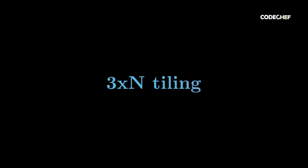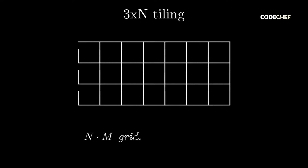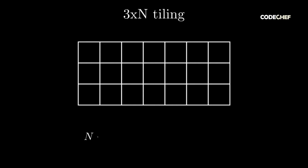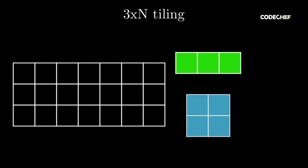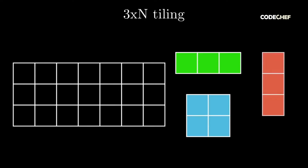This is a video editorial for the second problem from INOI 2020: 3 times n tiling. The problem code for this is INOI2002. In this problem, we're given an n times m grid where n is less than or equal to 3 and m is less than or equal to 10 to the power of 6. We're also given an infinite number of three types of tiles: 1 times 3 tiles, 2 times 2 tiles, and 3 times 1 tiles. We're meant to count the number of ways to tile the n times m grid such that there are no overlapping tiles, the entire grid gets tiled, and all tiles remain within the grid.